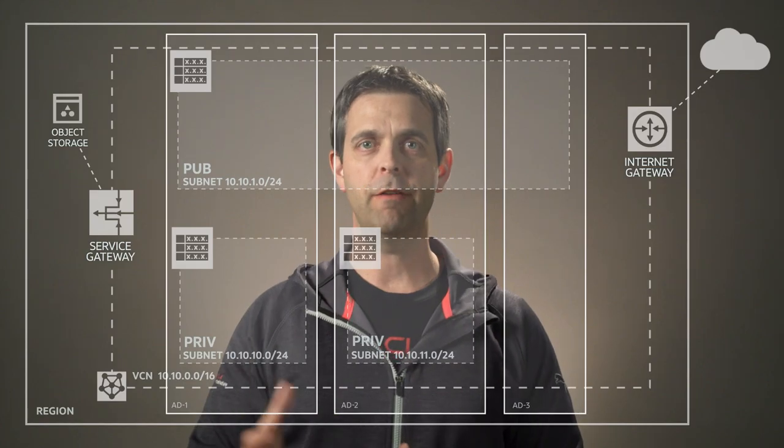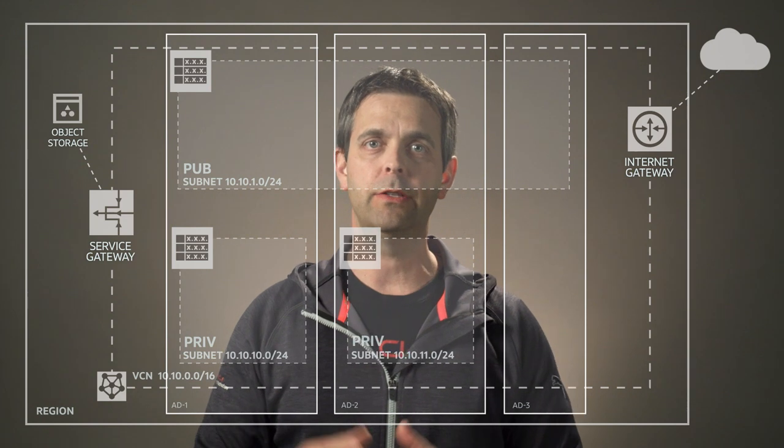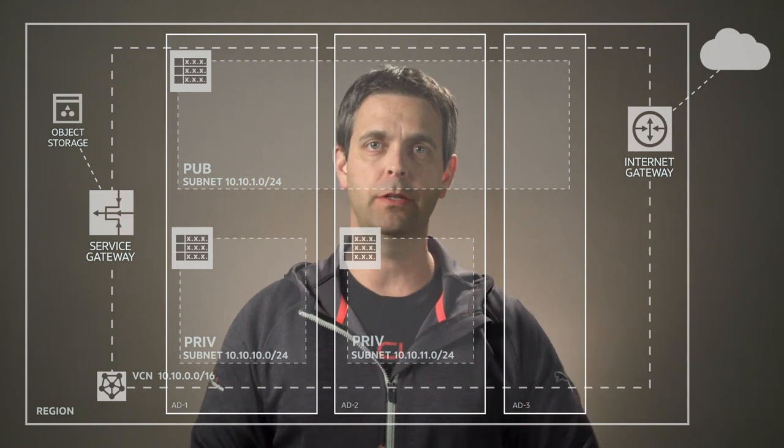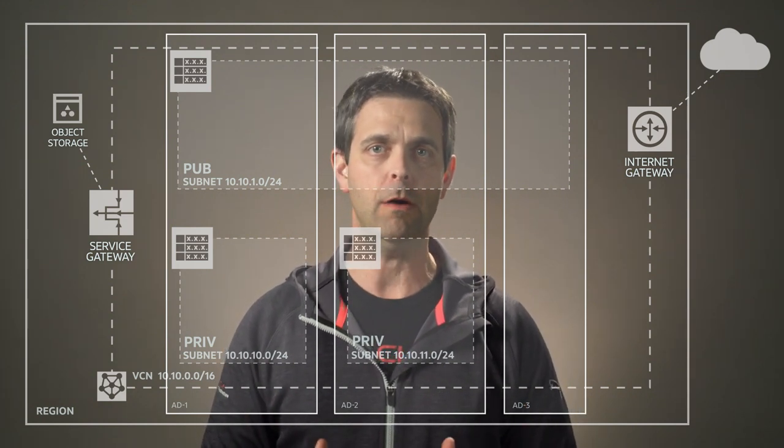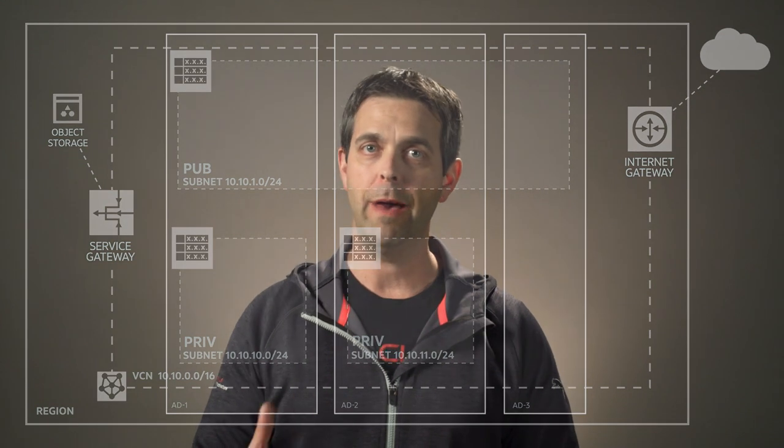So that, my friends, is how we construct traffic route rules within the Oracle Cloud. You'll see that we can route traffic through the internet gateway from our public subnet to the internet, and through the service gateway from our private subnets out to our object storage service. Come back for the next video — we're going to dig into the security module and talk about network security groups and security list rules. Thanks.